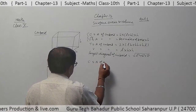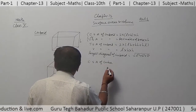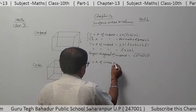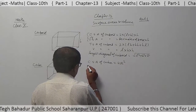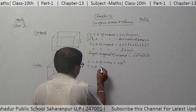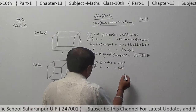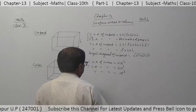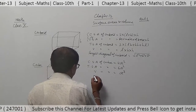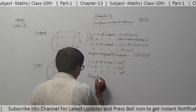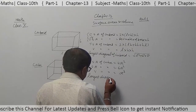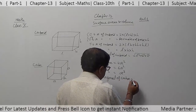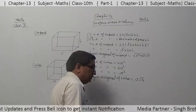Curved surface area of cube is 4A squared. Total surface area of cube is 6A squared. Volume of cube is A cubed. The longest diagonal of a cube is A root 3.